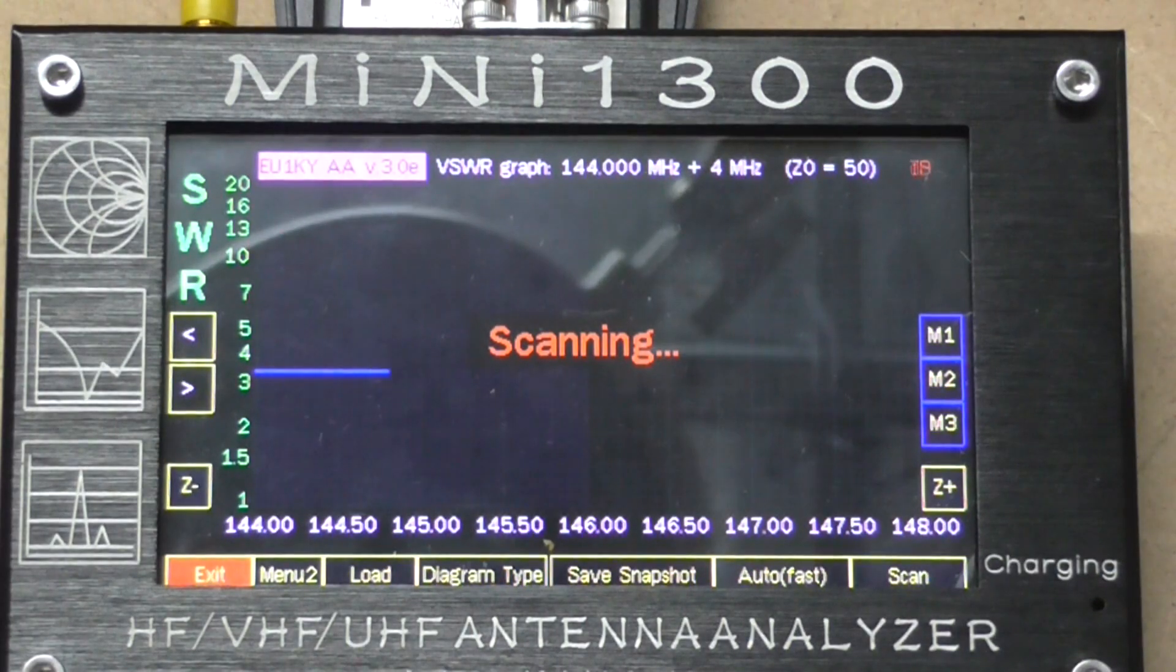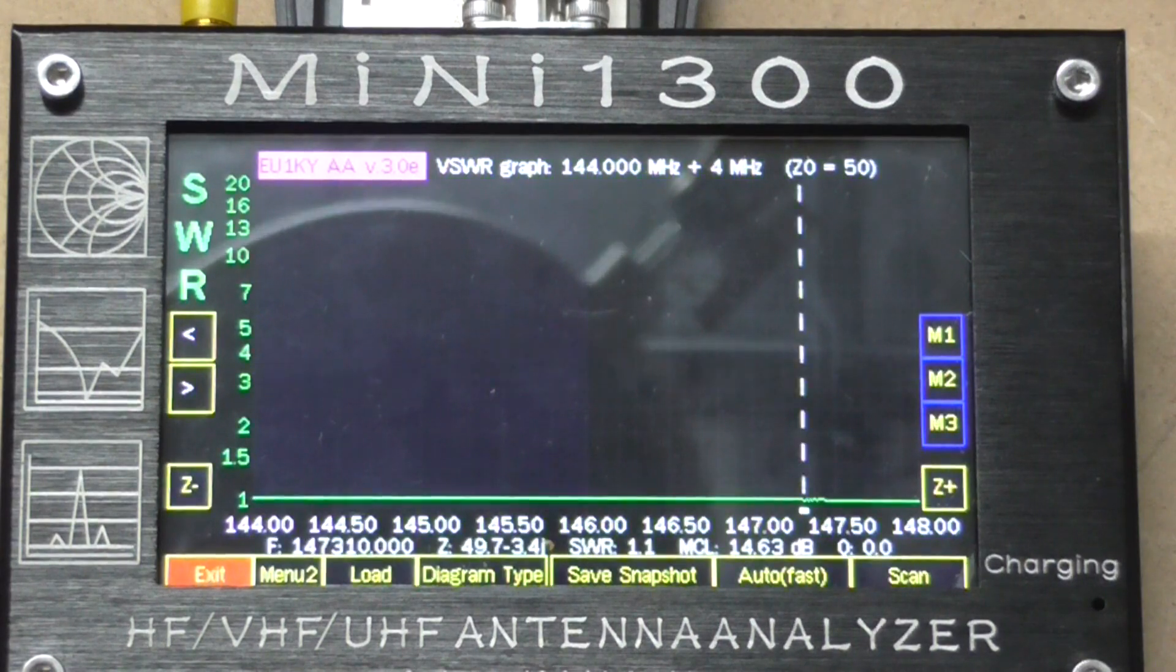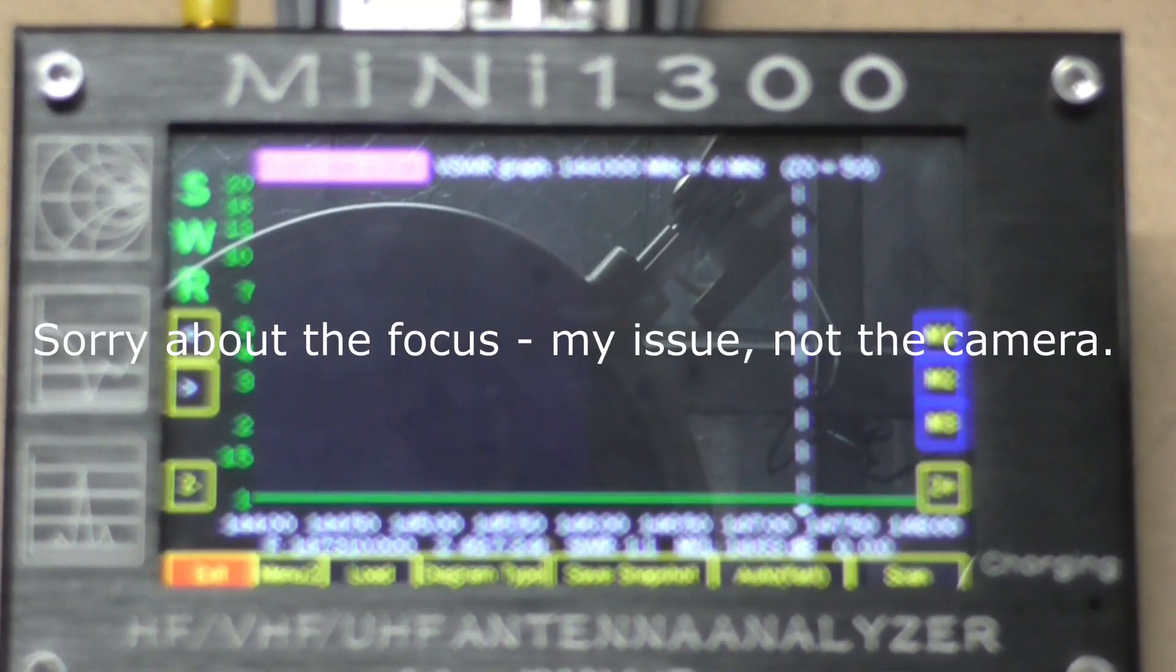Start the scan. Watch and waiting. There again we have it, dead flat right across, 1.1 to 1. Two meters, that dummy load is not going to be a problem, or this Mini 1300 is not reporting the wrong things.